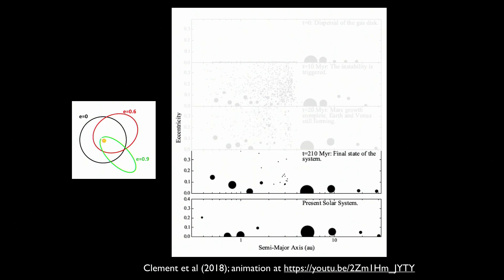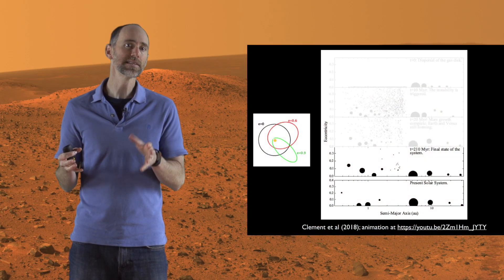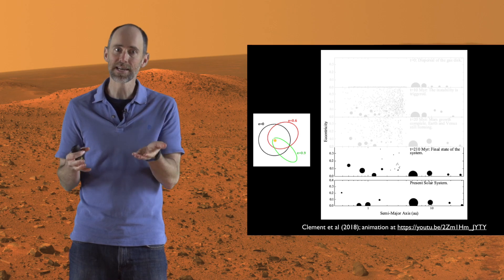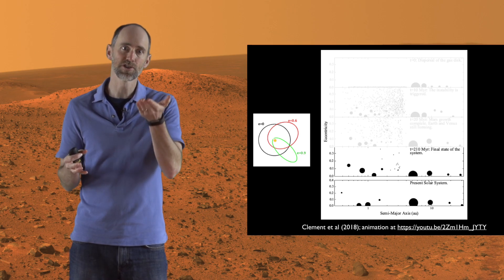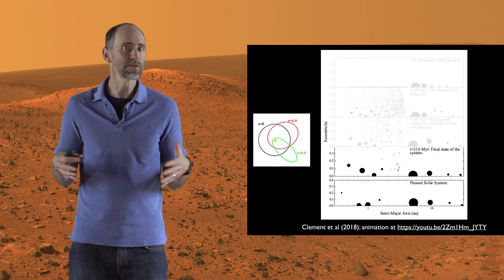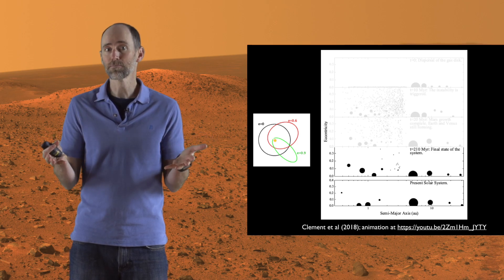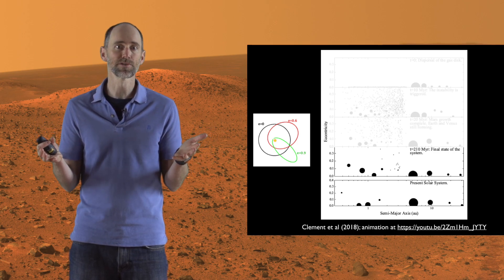The growth of Venus and Earth continues, and within a couple hundred million years, a large Venus, a large Earth, and a small Mars have formed. You can see it compares quite well with the present-day solar system shown below. The early instability model can match the broad properties of the inner solar system.